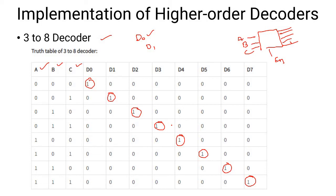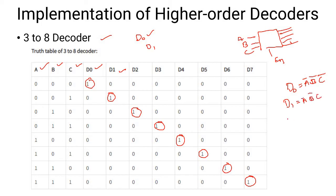The output equations are: D0 = A'B'C', D1 = A'B'C, D2 = A'BC', D3 = A'BC, D4 = AB'C', D5 = AB'C, D6 = ABC', D7 = ABC. We will implement these using AND gates.